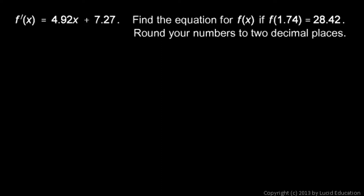And here's another problem, an antiderivative problem. We're told that f prime of x is 4.92x plus 7.27, and we're told to find the equation for f if f of 1.74 is 28.42, and we're told to round our numbers to two decimal places.